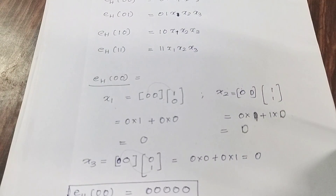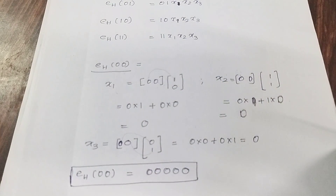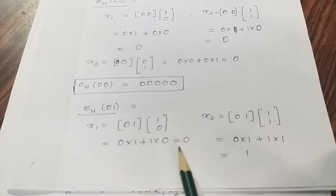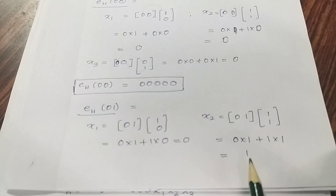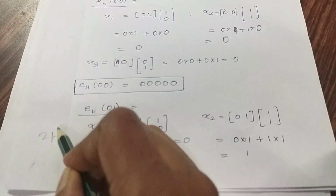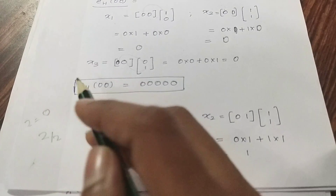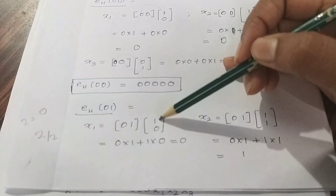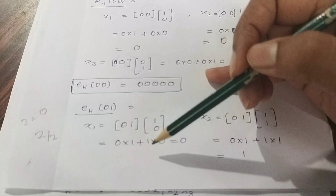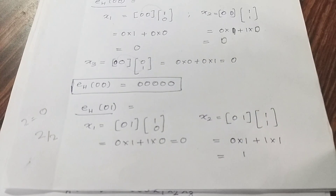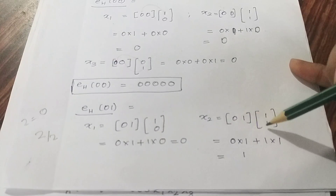The answer for e(0,0) is 0, 0, 0, 0, 0. Next, for case x1=0, x2=1: multiply 1 into 1 plus 0 into 1 plus 1 into 0 equals 0. The second row: 0 into 1 plus 1 into 1 gives answer 1.